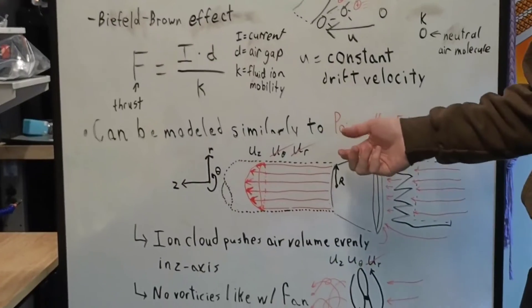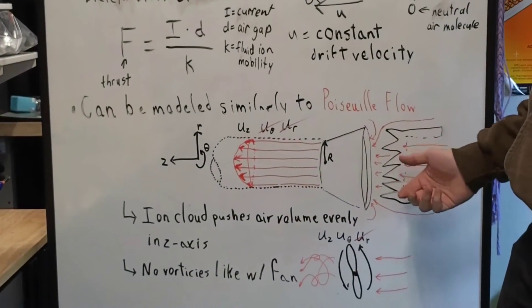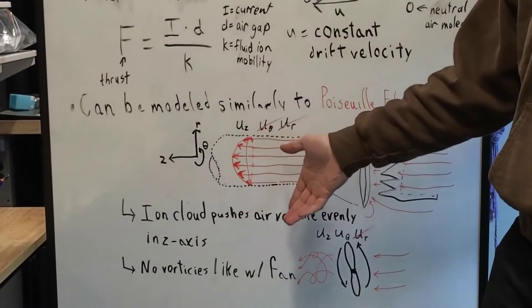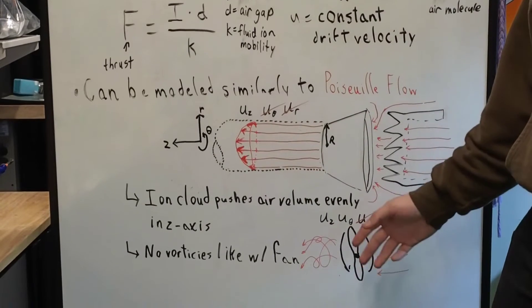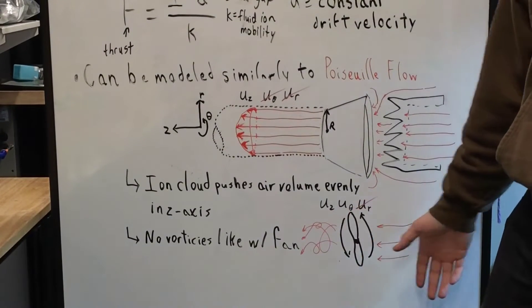This can be modeled by Poiseuille flow, where there is only velocity parallel to the ion cloud in the z-direction and no tangential or radial velocity. This is contrasted with a fan which has vortices because there's a tangential velocity in addition to velocity in the z-direction.